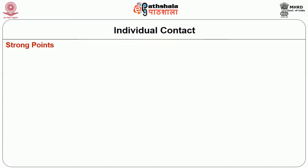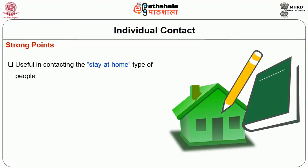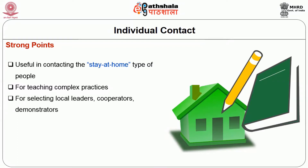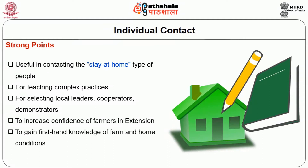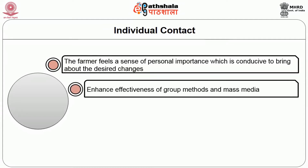The strong points of individual contact methods are: useful in contacting the stay-at-home type of people; for teaching complex practices; for selecting local leaders, cooperators, and demonstrators; to increase confidence of farmers in extension; to gain first-hand knowledge of farm and home conditions; and the farmer feels a sense of personal importance, which is conducive to bringing about the desired changes.